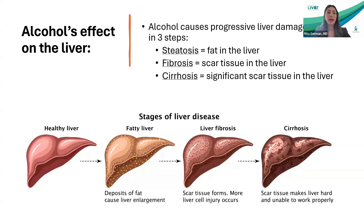Alcohol causes progressive liver damage, typically in three steps. First, fat sets into the liver — we call that steatosis. Eventually, that fat turns into scar tissue called fibrosis. And eventually, that fibrosis turns into what's called cirrhosis — stage four fibrosis, or significant scar tissue in the liver. At that point, the liver becomes scarred and hardened and cannot perform the functions it needs to.